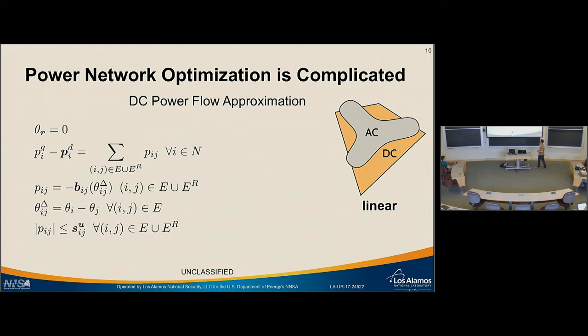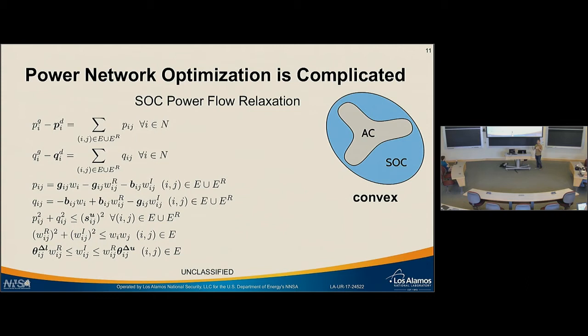What do people do in practice? They use the DC power flow approximation, which has no guarantees about the original problem, but all the physics has been linearized—so you can throw it into a MIP solver. An approach that's become more popular recently is power flow relaxation, which guarantees that we include every feasible point of the original non-convex set. One of the simplest forms has constraints that are a second-order cone and a convex cone, making it an easy problem to solve.